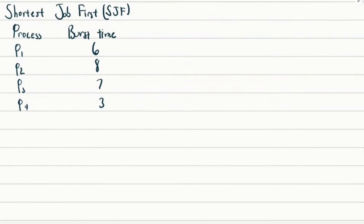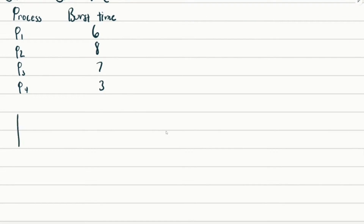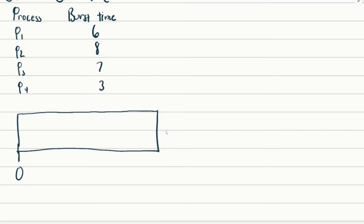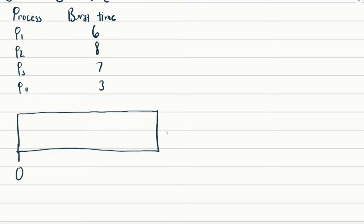Now let's go to the next example: the shortest job first algorithm. Instead of deciding who goes next based on who was there first, whoever has the shortest burst time goes next in line. It's kind of like being at a supermarket where a lady in front lets you go first because you only have one or two things — she'll get you out of line sooner.